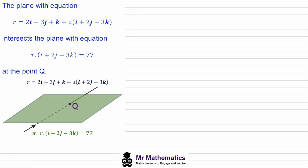In this next example we've been given the equation of a line in parametric form and the equation of a plane in its scalar product form, and we've been asked to work out the coordinates of Q. Perhaps you want to try this question yourself — pause the video and when you come back we'll go through the worked solution. The first thing I'm going to do is write the equation of the line using column vectors, as I find it easier to work with in this form.